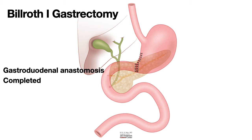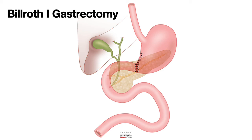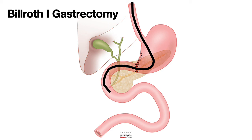Let us look at how the scope reaches the ampulla if you need to perform an ERCP. The scope goes down the esophagus, through the stomach, across the anastomosis, into the duodenum, and then you reach the ampulla, where you can cannulate similar to what you do in a regular ERCP for evaluating the bile duct.